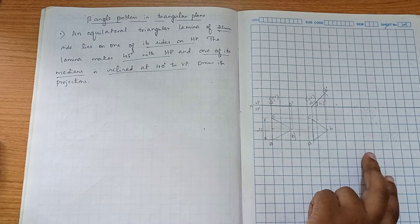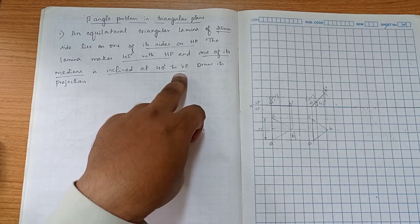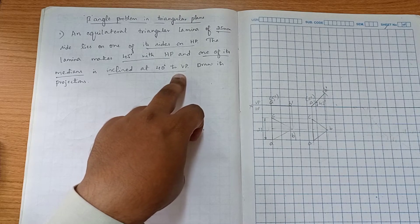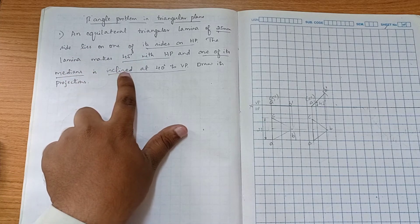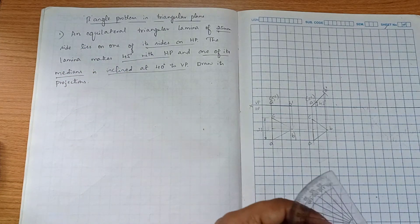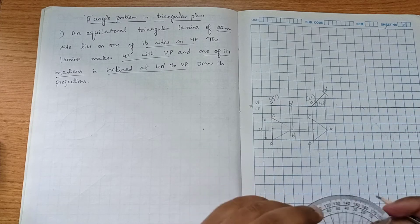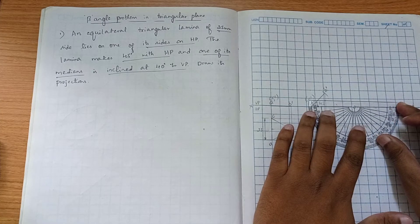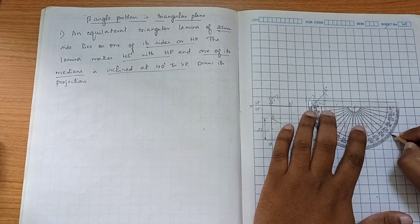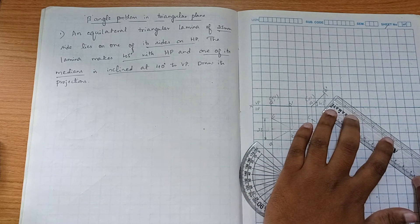Now we have to construct the third position: one of its medians is inclined at 40 degrees to VP. You can see the median here — it is given for an equilateral triangle, so this is a bit angle problem. The procedure is: first, mark the reference point, then at this reference point mark 40 degrees, because the angle of inclination to VP is 40 degrees, so draw an angle line here.